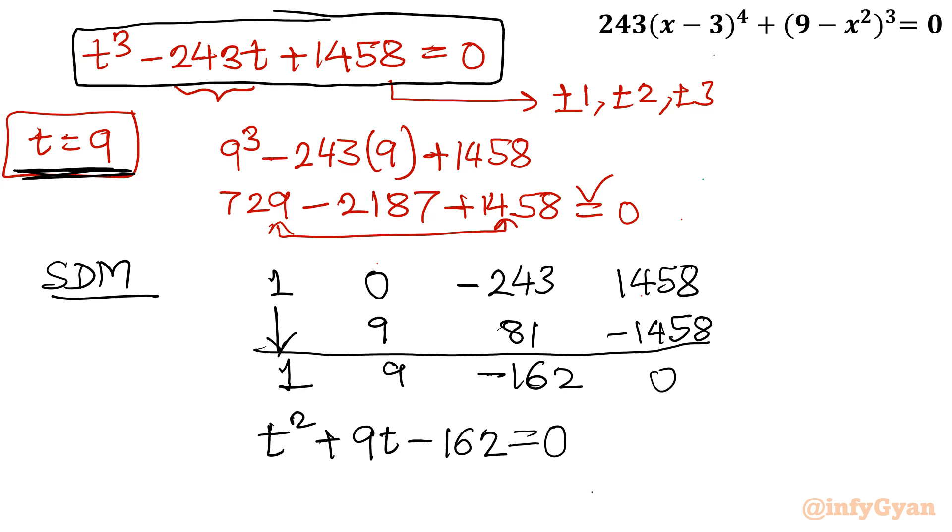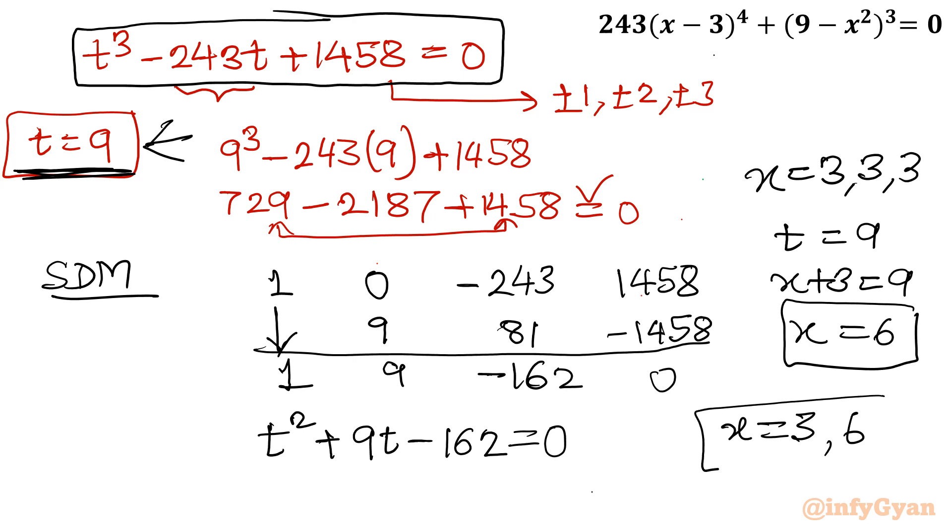So far what we have: solutions 3, 3, 3 or 3 with multiplicity 3, and t equal to 9. This is also our solution. So in place of t equal to 9, t was x plus 3, our substitution. So x is equal to 6. So up to this point we have calculated 4 roots: 3 with multiplicity 3 and 6. Two solutions will come from this quadratic equation.